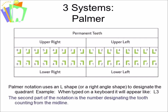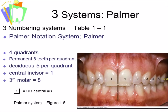The Palmer Notation System uses an L-shape or right-angle shape — a piece of a square — and that L will be facing whichever direction best designates the quadrant. If typed on a keyboard, it may look like L3, but with digital tools, it typically appears as a right-angle shape. The second portion of the notation is the number of the tooth when counting from the midline back to the third molar.